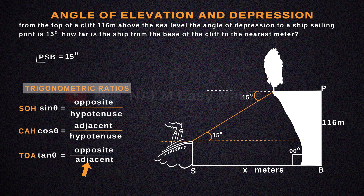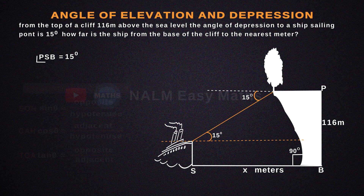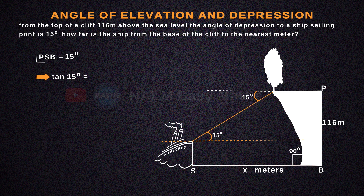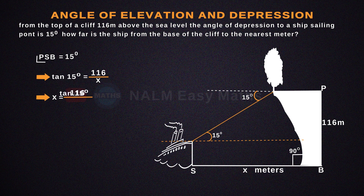That's our formula. In this equation, our theta value is 15 degrees and the opposite value is 116 meters. Now let's find the X value, the distance from the ship to the base of the cliff. So, tan 15 degrees equals 116 over X, which gives us X equals 116 over tan 15.